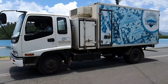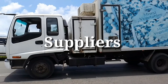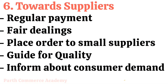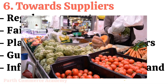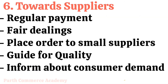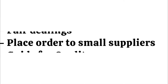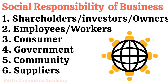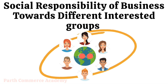And the last is social responsibility of business towards suppliers. First is to ensure regular and timely payment to suppliers. Then adopt fair dealings with suppliers. Next is to protect and assist small-scale suppliers by placing orders with them. Next is to guide suppliers in improving the quality of their products, and to keep suppliers informed about changes in consumer demands. So these are all social responsibilities of business towards different interested groups. I hope you understood everything properly.